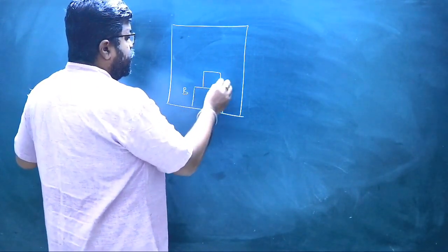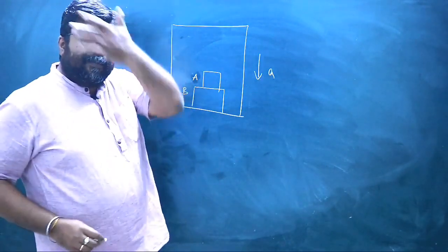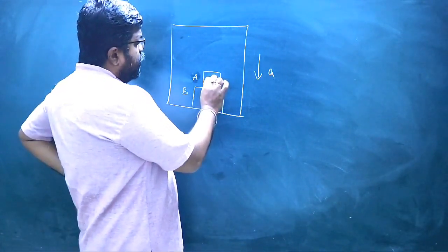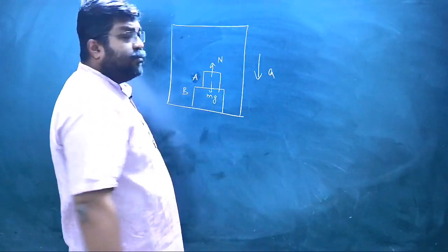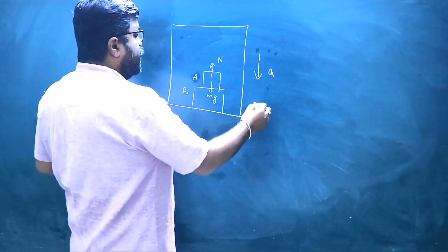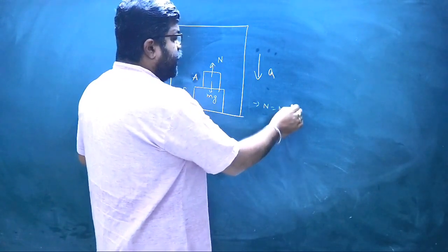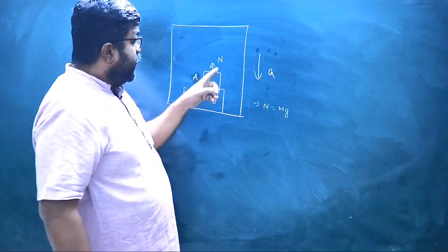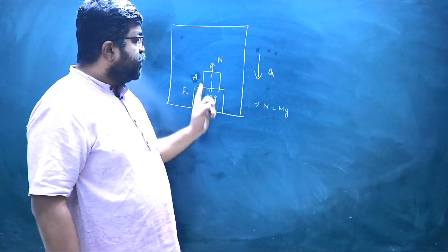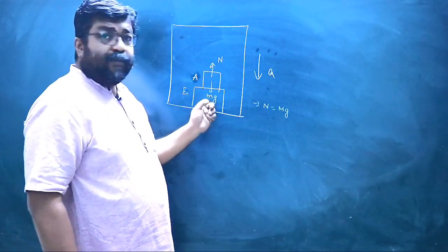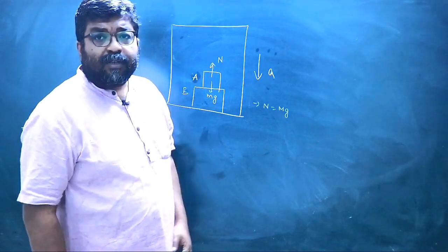In the diagram, block B is at the bottom and block A is on top of block B. The normal reaction N is the force exerted on A by B, and Mg is the force exerted on B by A. This is an application of Newton's third law of motion.